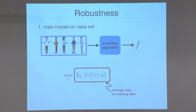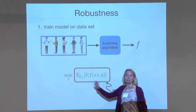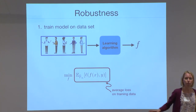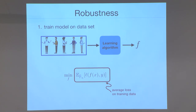What we do typically is we have our training data set, and we train a model to fit this data set. A common principle is so-called empirical risk minimization: we try to fit the model as well as possible to the data, using some loss function L, and we minimize the average loss on the training data — written as an expectation under the empirical distribution P-hat-N.